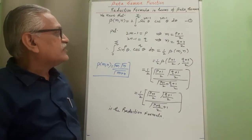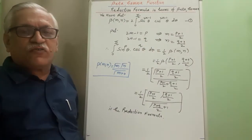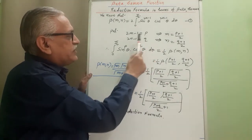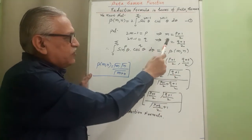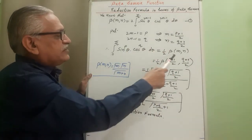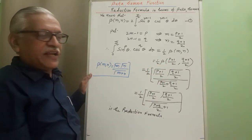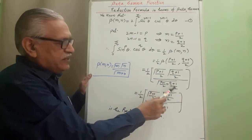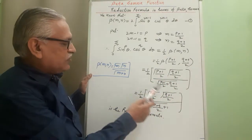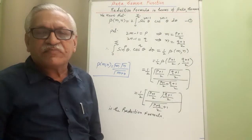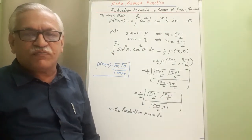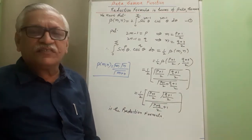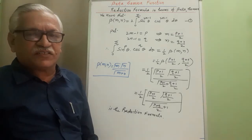This is a very simple proof. We take the help of the property for the beta function, substitute 2M minus 1 as P and 2N minus 1 as Q to get the values of M and N, then apply the relation beta(M,N) equals gamma(M) times gamma(N) divided by gamma(M+N). The resulting formula is called the reduction formula in terms of the beta gamma function. We will now discuss two simple examples based on this.